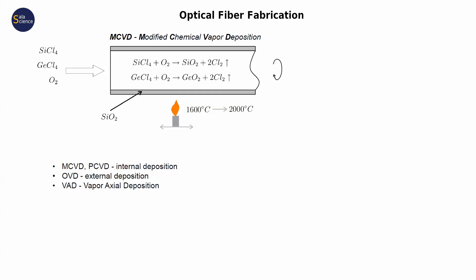The tube is rotated and heated evenly up to 1600 degrees Celsius. After some time, a thin layer is deposited on the inner part of the tube. To collapse the tube, it is heated up to 2000 degrees. Diameter of such preform is much larger than the diameter of a fiber.